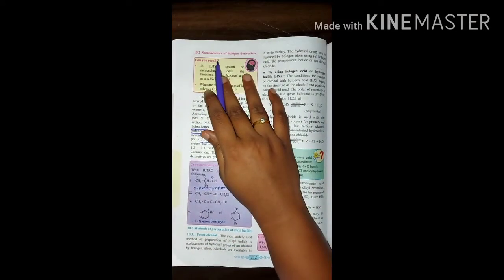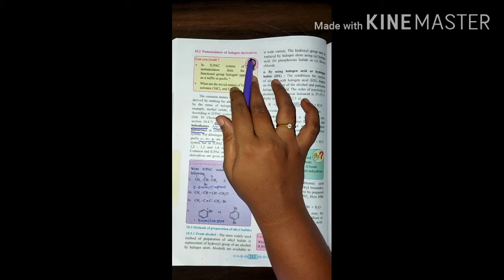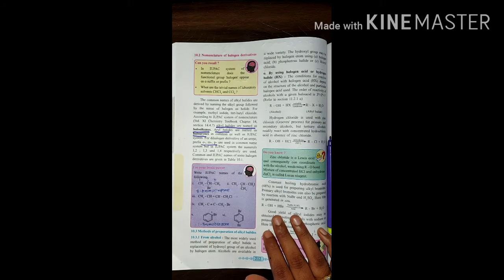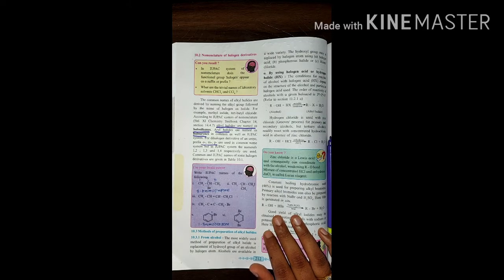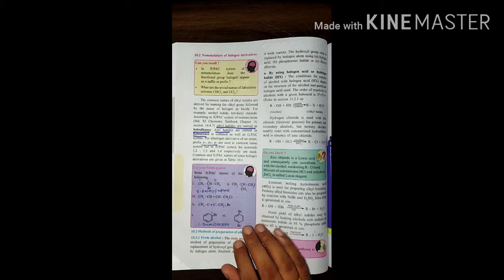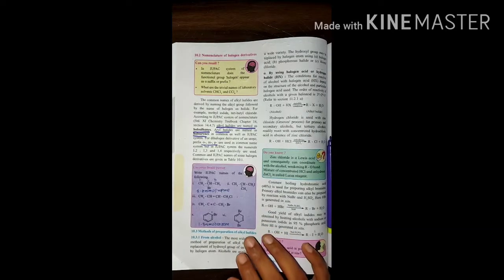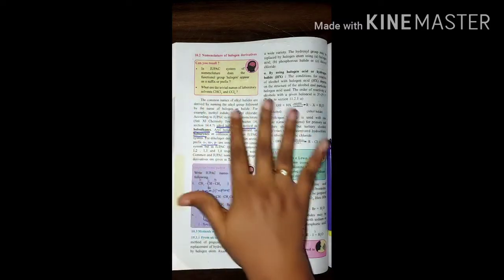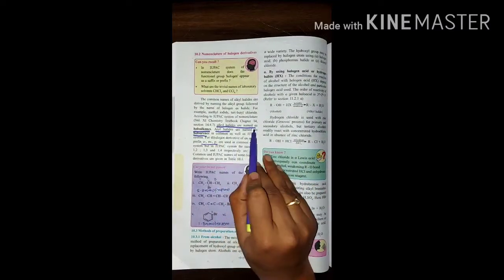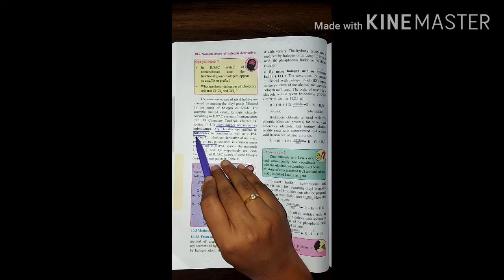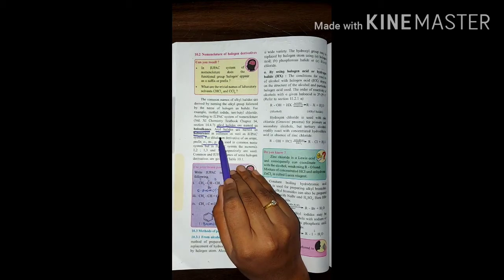Hello everyone, our next point is nomenclature of halogen derivatives. Nomenclature is of two types, that is common names and IUPAC names. Common names are the names that have been given earlier, and IUPAC nomenclature follows step-by-step rules. Alkyl halides are named as haloalkanes. Aryl halides are also called haloarenes.